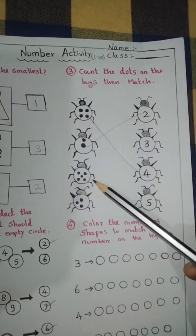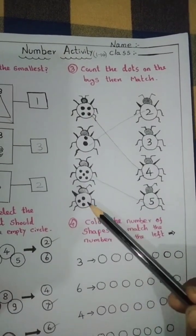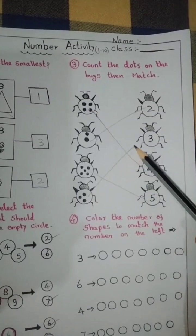1, 2, 3, 4, 5 dots, match number 5. 1, 2, 3 dots, match number 3.